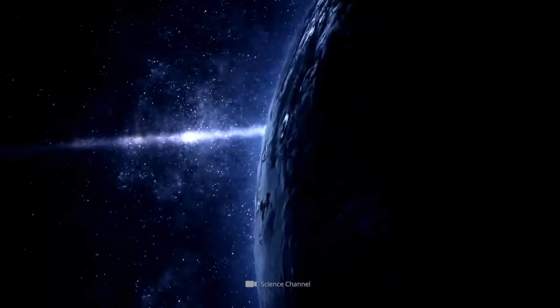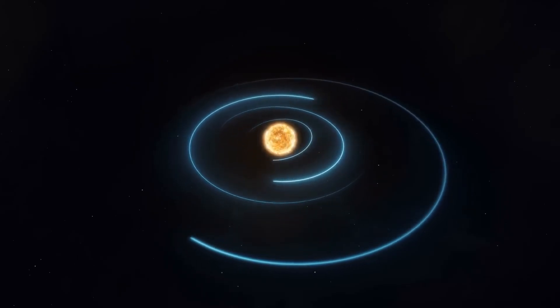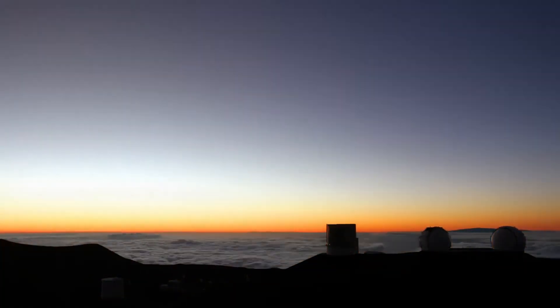Ring system: Neptune has a faint and relatively unexplored ring system. The origin of its rings, their composition, and how they interact with Neptune's moons are subjects of ongoing research.